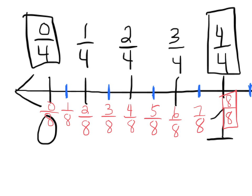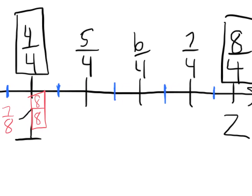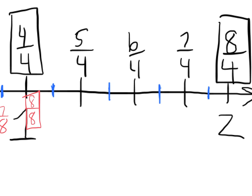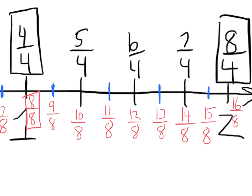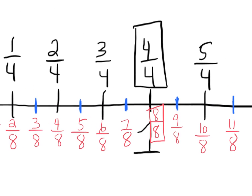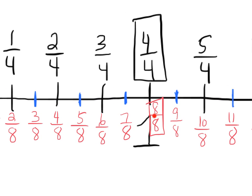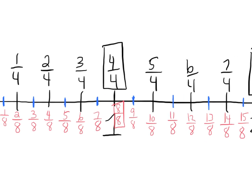Now if we wanted to, we can continue on with the next intervals, the next whole number, so then we've got 9 8ths, 10 8ths, 11 8ths, 12 8ths, 13 8ths, 14 8ths, 15 8ths, and then 2 is 16 8ths. So sure enough, 16 divided by 8 is 2, and then if we wanted to, we can say, well, 8, 8 divided by 8 is 1. So let's zoom out a little bit here.